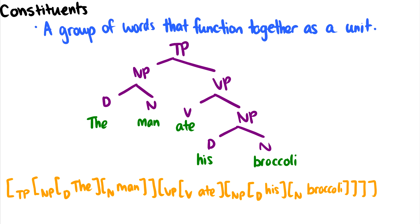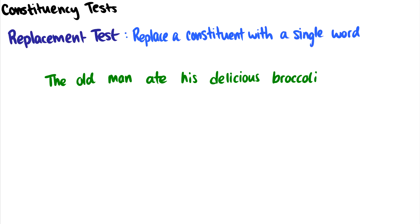Let's take a look at four tests we can use to determine whether or not something is a constituent. The first constituency test is the replacement test, which says that you can replace a constituent with a single word in the same category. Typically these are going to be used for noun phrases. For instance: 'the old man ate his delicious broccoli' — with 'the old man,' we could replace it with 'he,' giving us 'he ate his delicious broccoli,' which means 'the old man' functions as a unit. Similarly, we can replace 'his delicious broccoli' with 'it,' giving us 'the old man ate it' — therefore we know 'his delicious broccoli' functions as a unit.